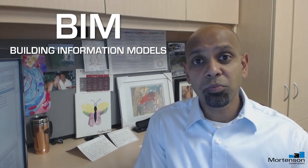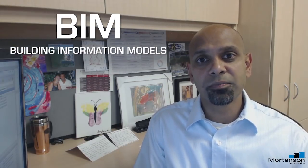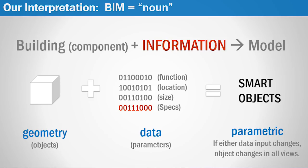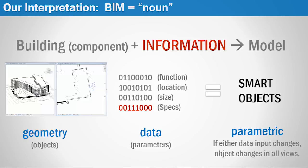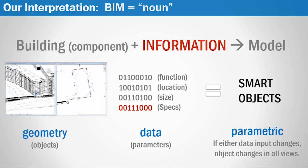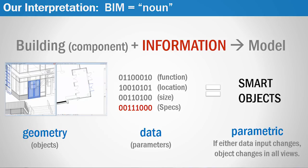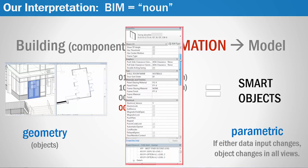Let's get started with BIM — Building Information Models. From our perspective, BIM is simply a 3D object, or a noun. It's a thing. BIM has two key attributes: one is the geometry itself — the object — and two is the associated data with that object.